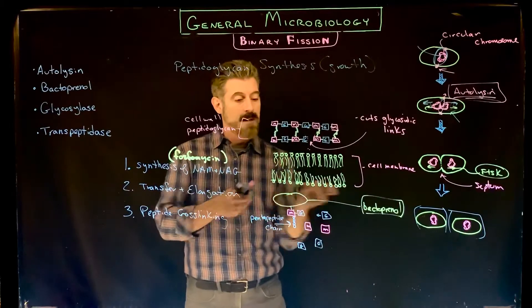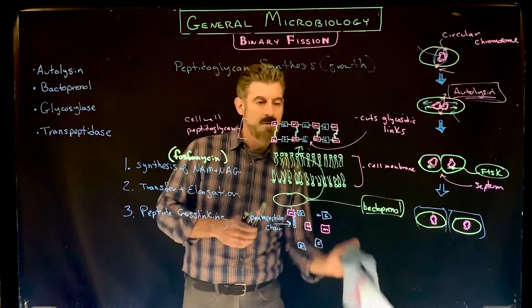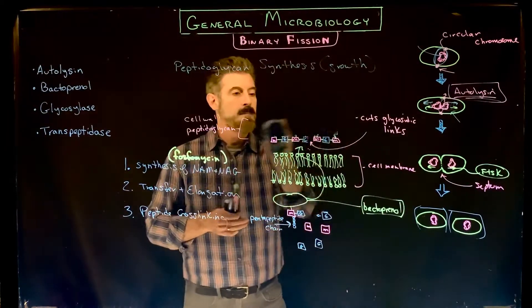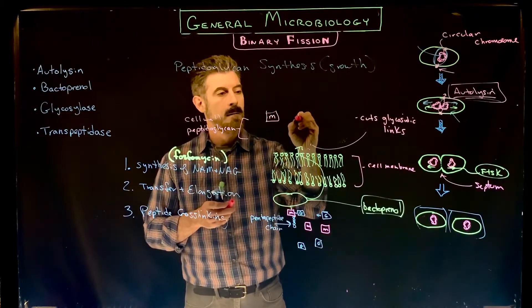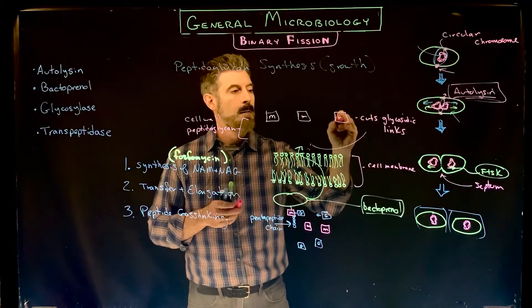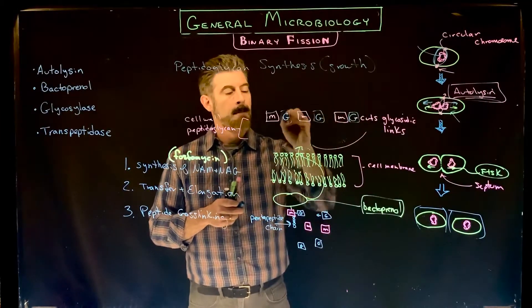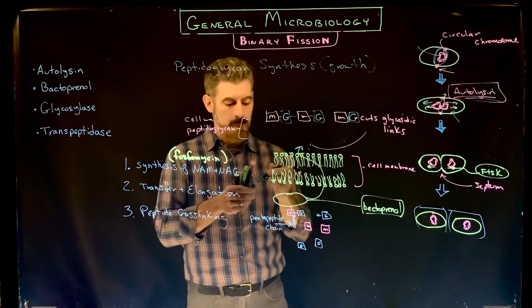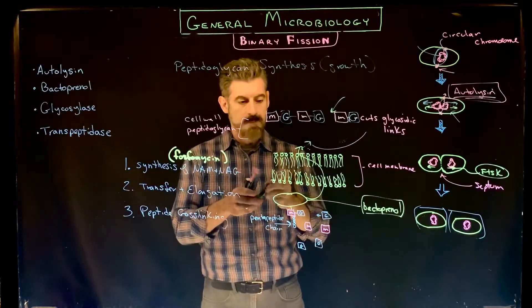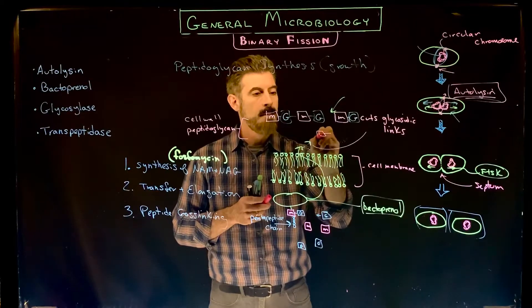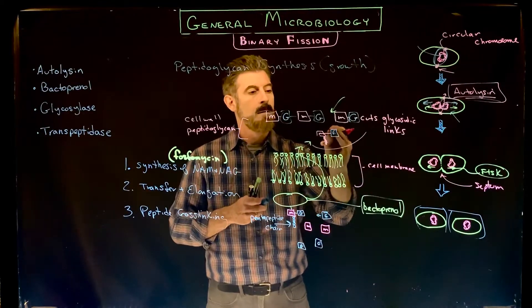Autolysin breaks the bond, and then the bactoprenol brings this up here and transports the new NAM-NAG out to the periplasm.